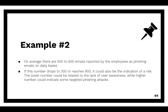In example number two, assume that on average we have 500 to 600 emails reported by employees as phishing emails every day. We define the low threshold at 300 and the high threshold at 900. If the number drops to 300, it could be related to a lack of user awareness — users are not reporting phishing emails the way that they should. And the higher number could be the indicator of some targeted phishing attacks, where people are receiving lots of phishing emails, so there could be something wrong.